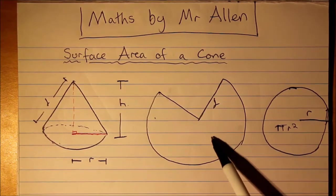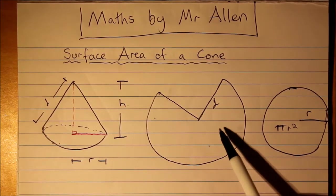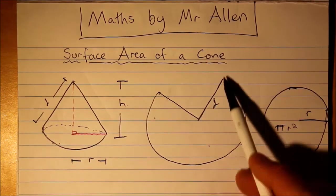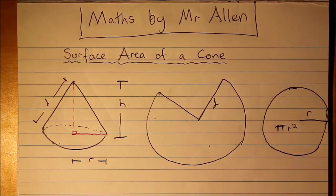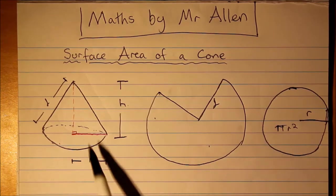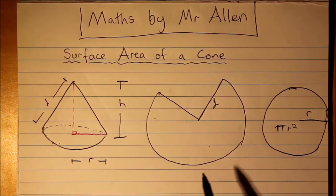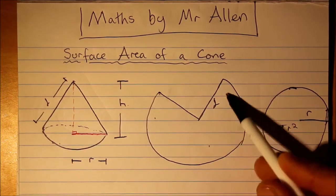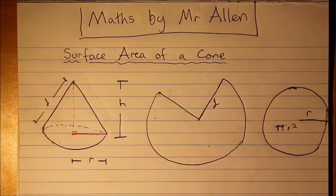Now here we have, you can see if you cut a part of a larger circle out, and when you bring it together, that makes the side of the cone. So we're going to have a larger radius there, but it's not a full circle.